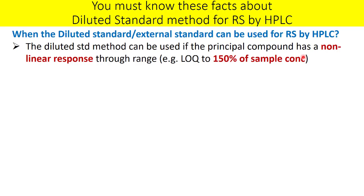At higher concentrations, you may not get a similar increase in response. For example, with UV detection, you may achieve linear response up to an absorbance of 1.5 AU, but beyond that you may get a lower increase in response for further increases in concentration. This is called the limitation of Beer-Lambert's law, caused by the photometric effect. So even if you increase the concentration, you may not get a proportional increase in response.